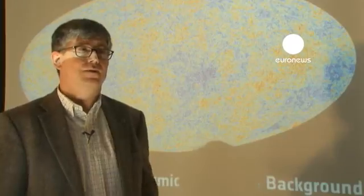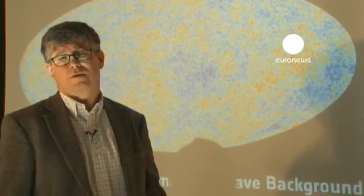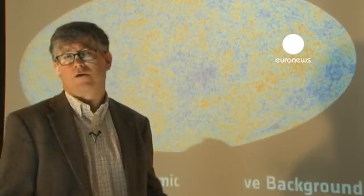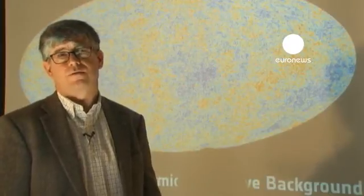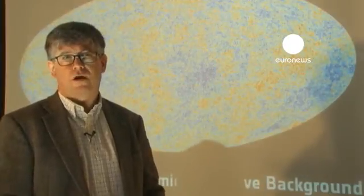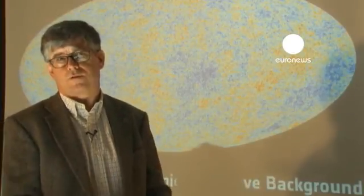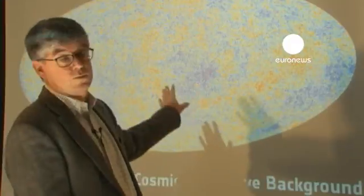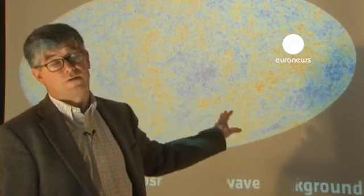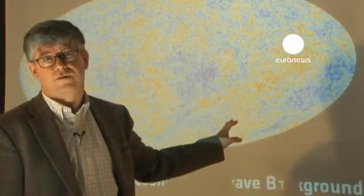Well, it's a map in the same way as we make a map of the sky in optical light, for example. If you see a map of the sky with all the constellations on it, that's also a map. It's a picture of the whole sky. And that's what we have here. Except it's in a different kind of light. That's the only real difference.